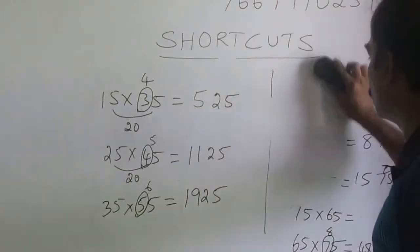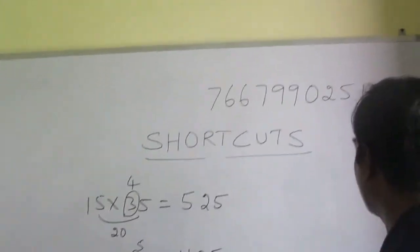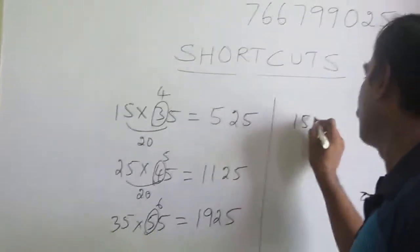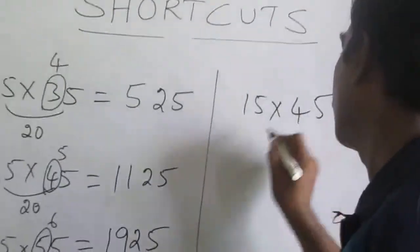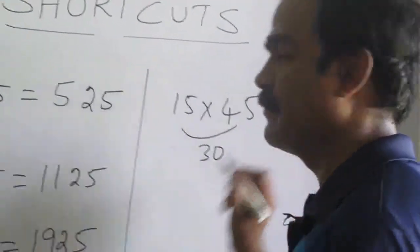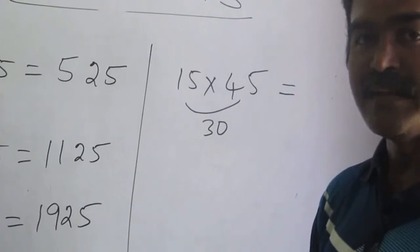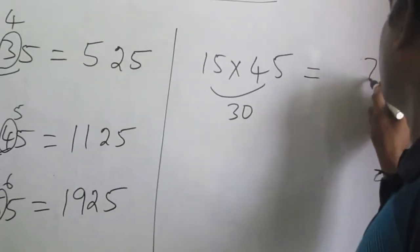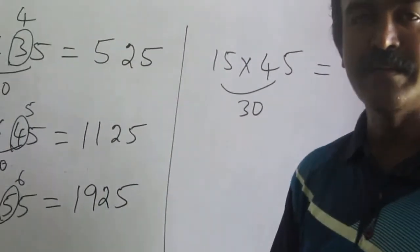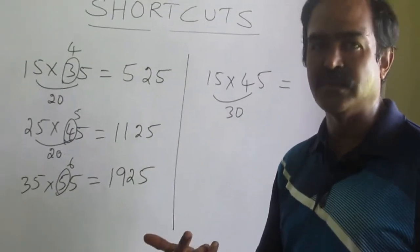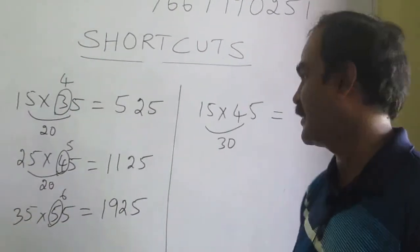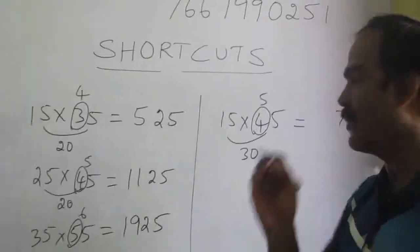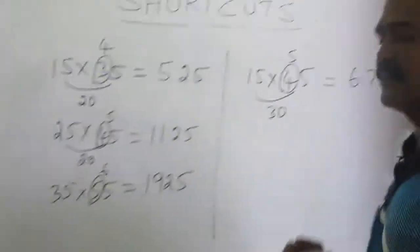Let us do two more questions. I am going to increase the gap by 10 more: that is 15 times 45. The gap between the numbers is 30. Whenever the gaps are 10, 30, 50, 70, or 90, the last two digits will be 75. Whenever the gaps are 20, 40, 60, 80, or 0, the last two digits will be 25. So for 15 times 45, increase one more: 1 times 5 is 5, add 1 to that. So the answer is 675.